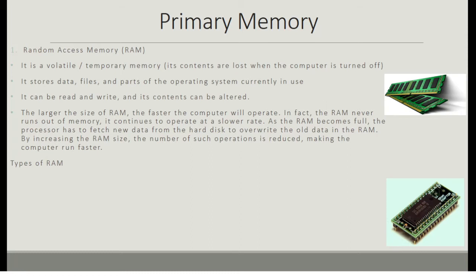The RAM never truly runs out of memory — it continues to operate at a slower rate. As the RAM becomes full or nearly full, the processor has to fetch new data from the hard disk to override the old data in RAM. By increasing the RAM size, the number of such operations is reduced, making the computer run much faster.